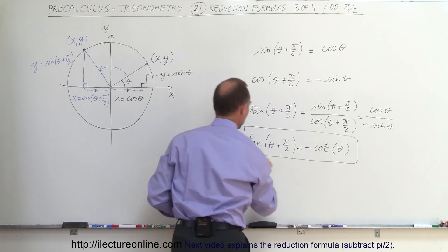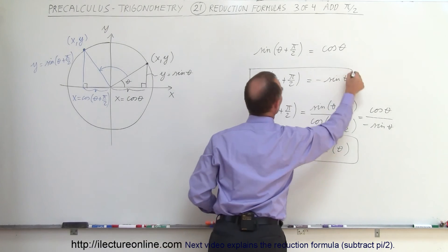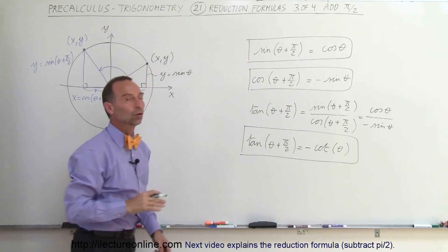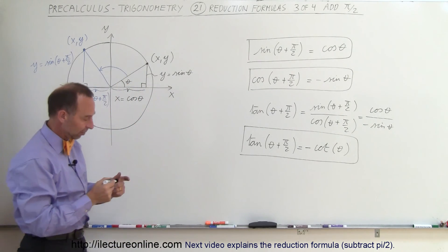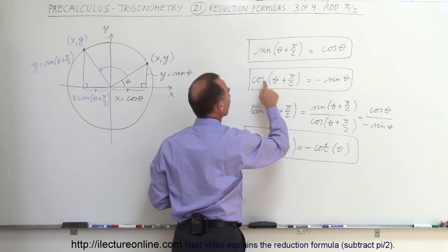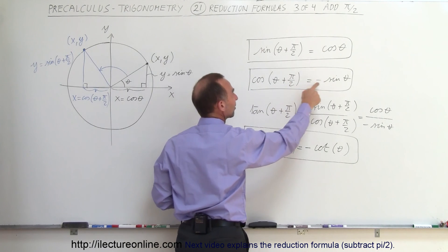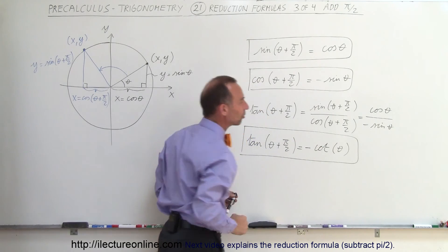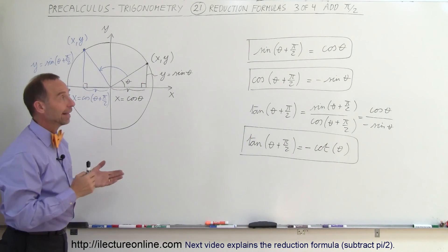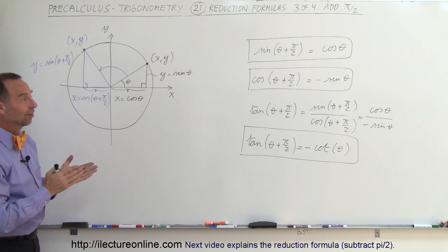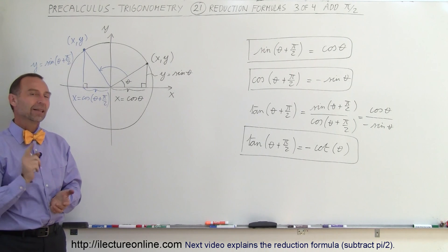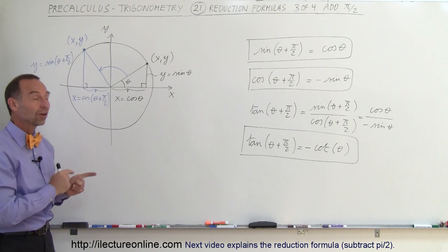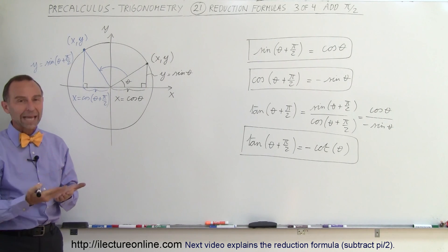These are the three reduction equations obtained when we add pi over 2 to the angle. In the case of sine, adding pi over 2 gives the cosine. In the case of cosine, adding pi over 2 gives negative sine. In the case of tangent, adding pi over 2 gives the negative cotangent of the angle. On the next video, we're going to subtract pi over 2 and see what we get — we actually get different results when we subtract rather than add pi over 2.